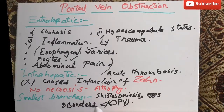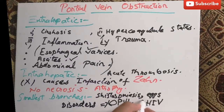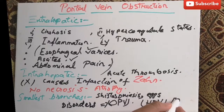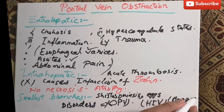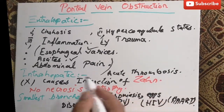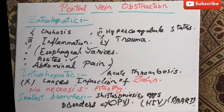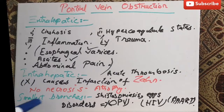Portal vein obstruction can also occur in patients with HIV who are undergoing HAART therapy. This covers portal vein obstruction at the extrahepatic level, intrahepatic level, and of the smallest branches of the portal vein, along with their manifestations. Thank you for watching.